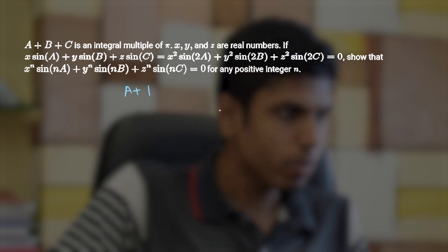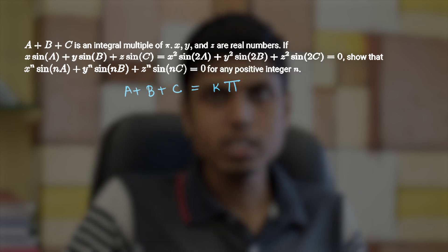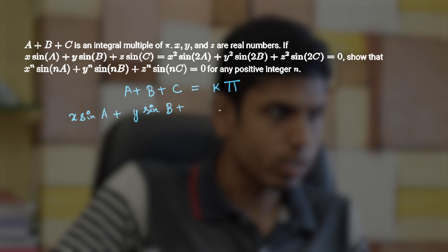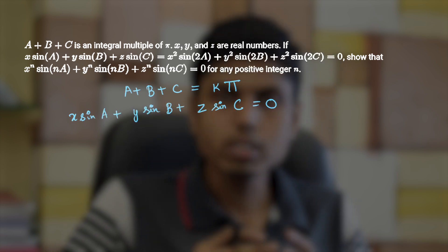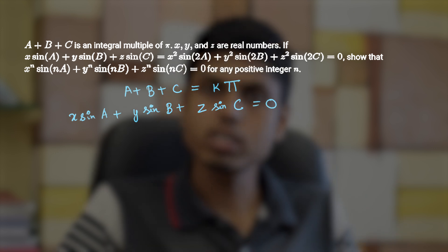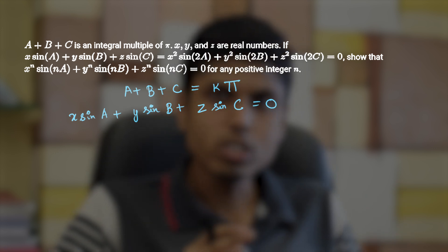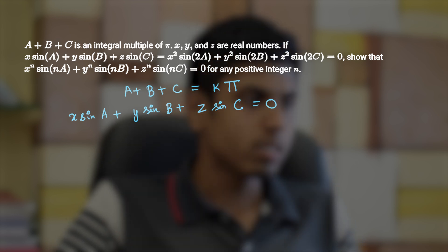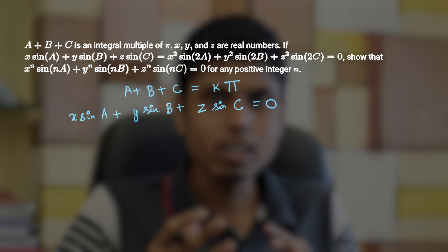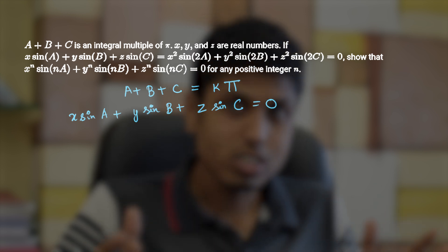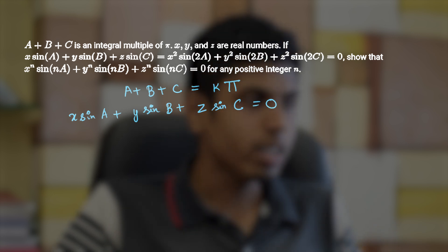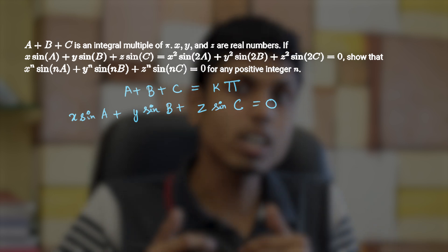It's given that a plus b plus c is a multiple of pi, and x, y, z are real numbers such that x sin a plus y sin b plus z sin c equals 0. Similarly, x squared sin 2a plus y squared sin 2b plus z squared sin 2c equals 0. We have to prove the general result for power n and the angle multiplied by n.